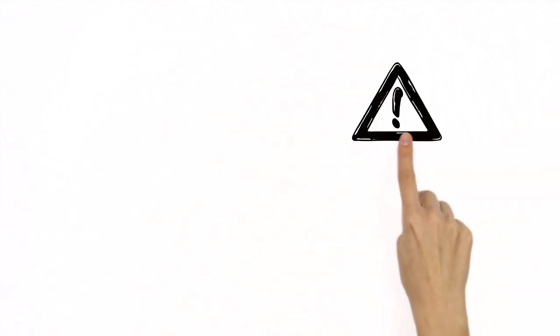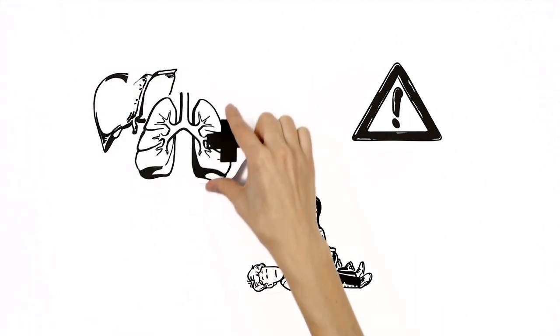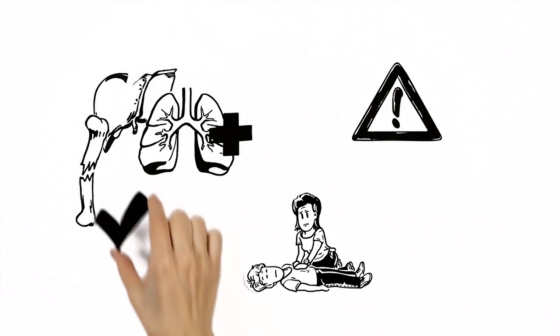But there are some complications for Maria to keep in mind. Tearing of the liver can occur, as can bruising of the lungs. Rib fractures are relatively likely, but much better than the alternative.